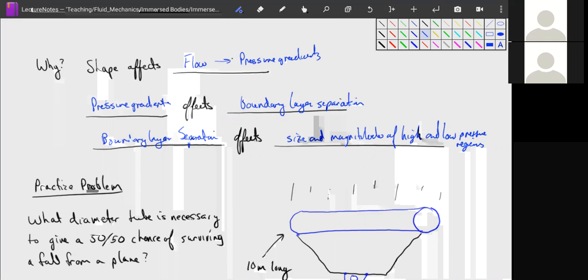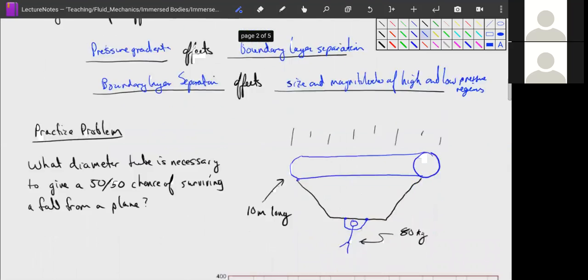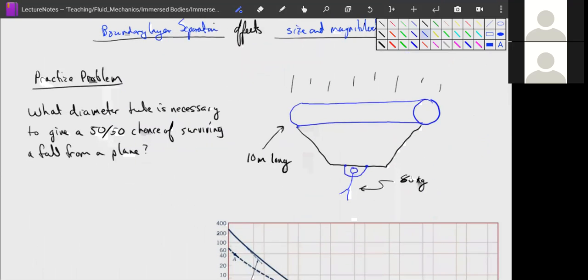For now, for blunt objects, the drag is dominated by these effects. So one question I've always wanted to know was if you fell out of a plane and all you had was a very large tube that was 10 meters long, what diameter of tube is necessary to give yourself a 50-50 chance of surviving a fall from a plane?